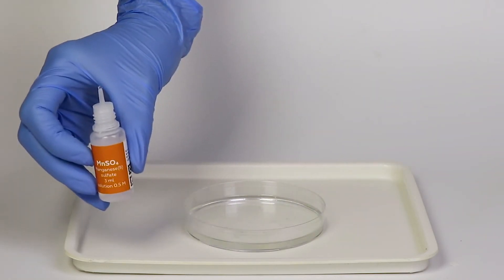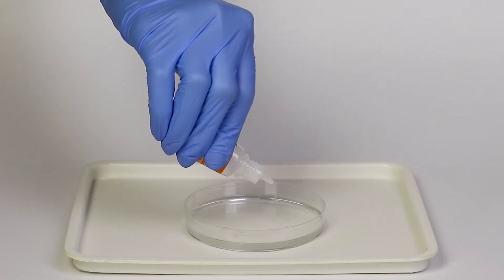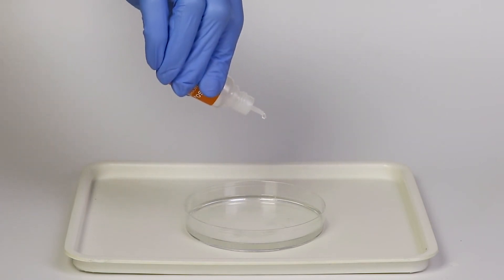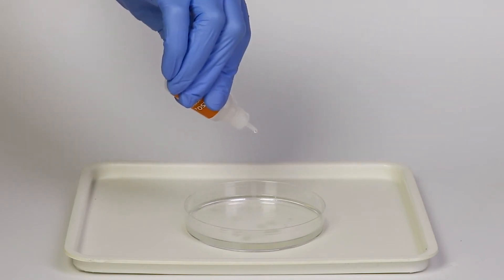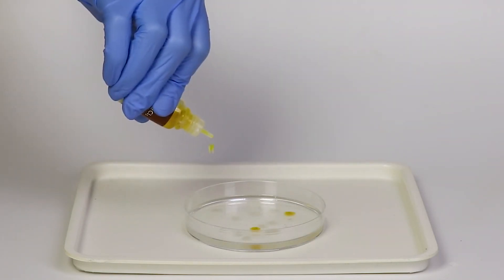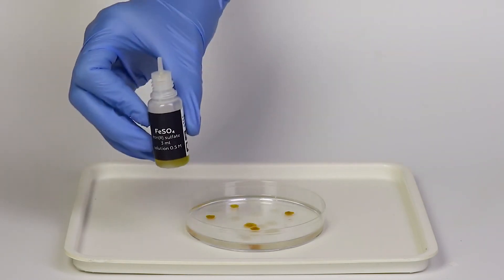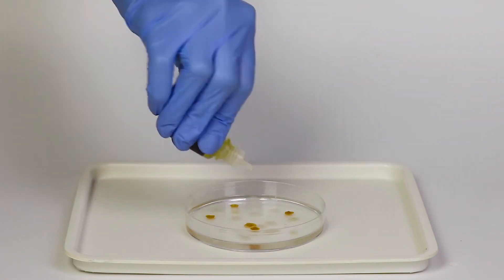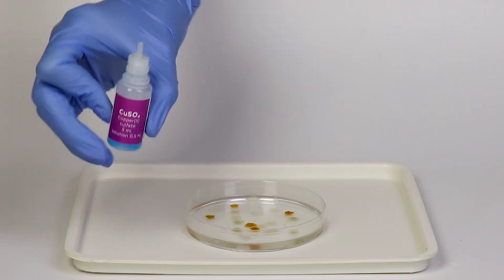Now take the manganese sulfate solution and add six to ten individual drops from various heights and in different places on the petri dish. Repeat with the solutions of ferric chloride, ferrous sulfate and copper sulfate.